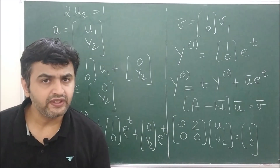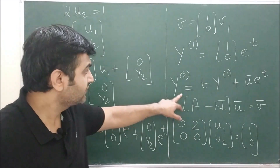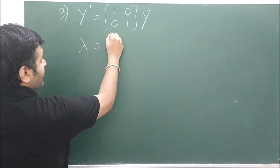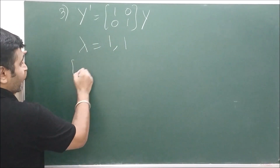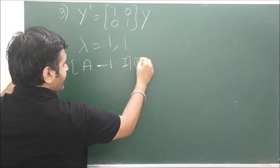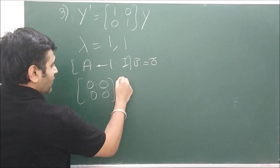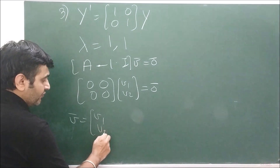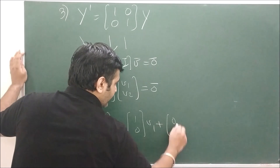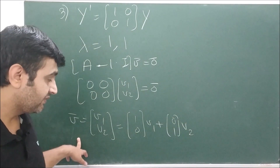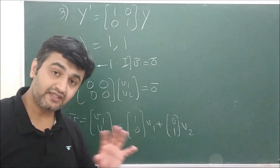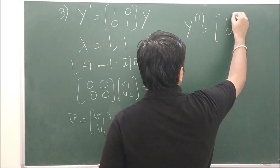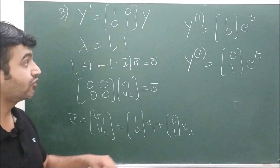If you are getting two linearly independent eigenvectors for repeated eigenvalues, there is no problem — no need for a generalized eigenvector. For example, take the third system: a diagonal matrix with 1s on the diagonal. The eigenvalues are both 1. Solving (A − I)·v̄ = 0 gives [0,0;0,0]·v̄ = 0, so there is no condition on v1 or v2. Thus v̄ = v1·[1,0]ᵀ + v2·[0,1]ᵀ, giving two linearly independent eigenvectors [1,0] and [0,1] (i.e., e1 and e2).